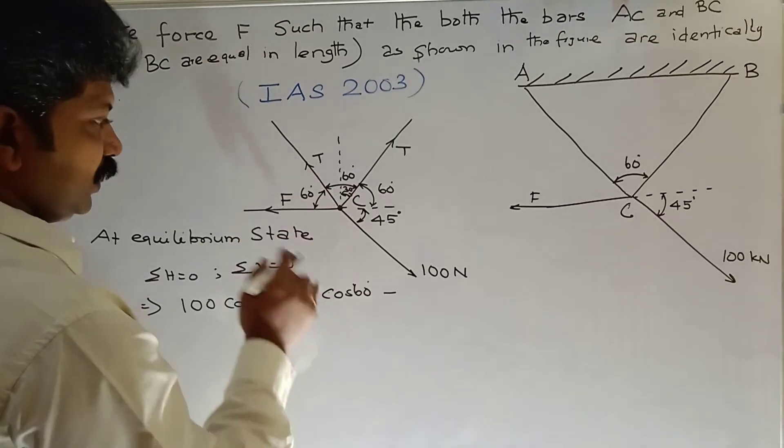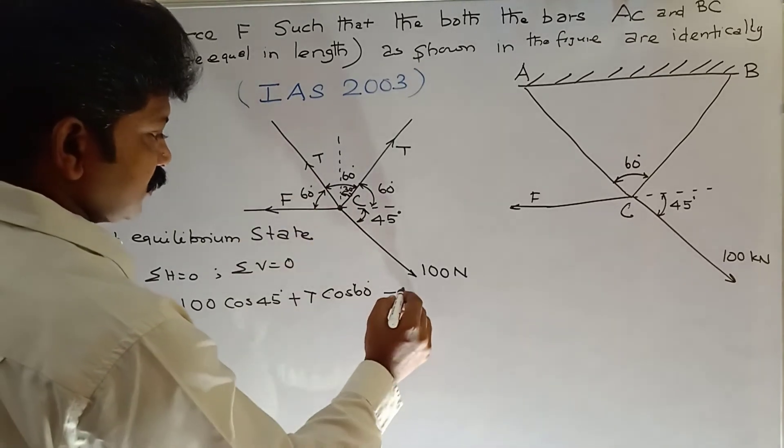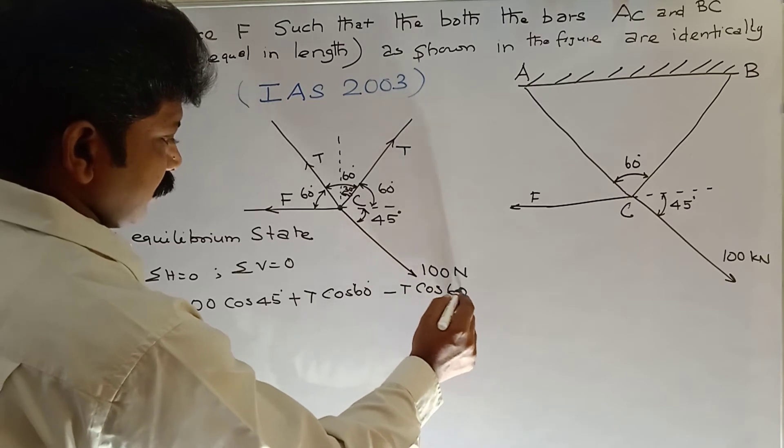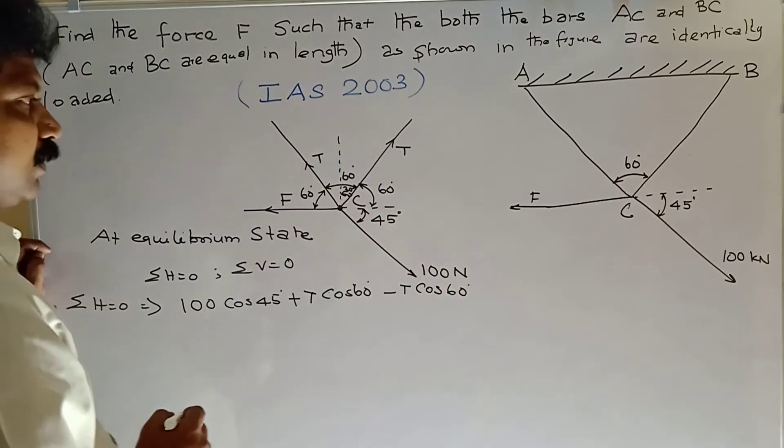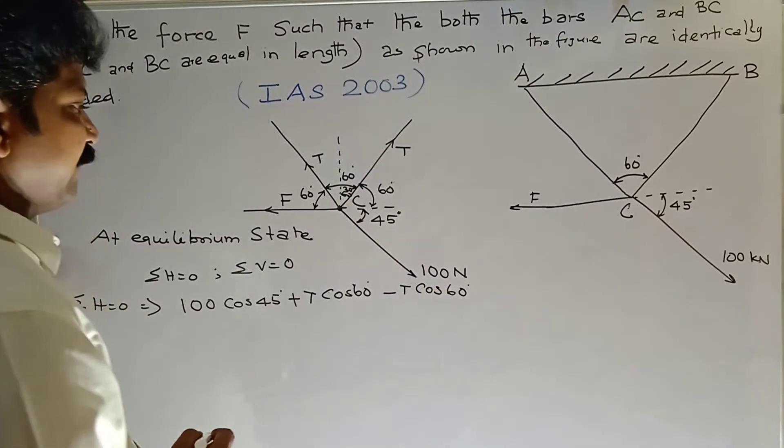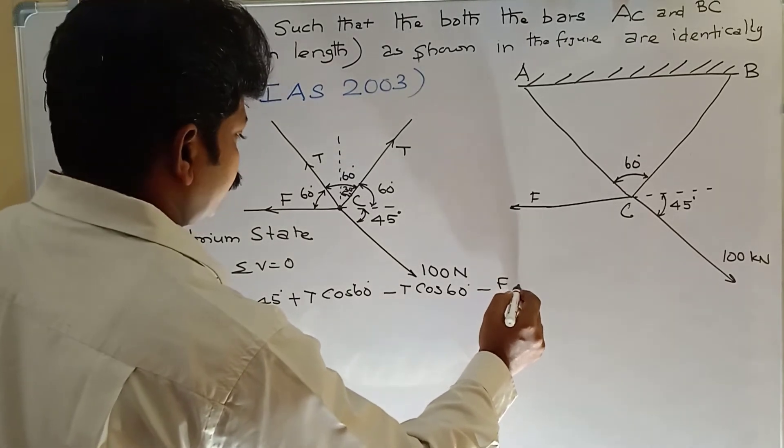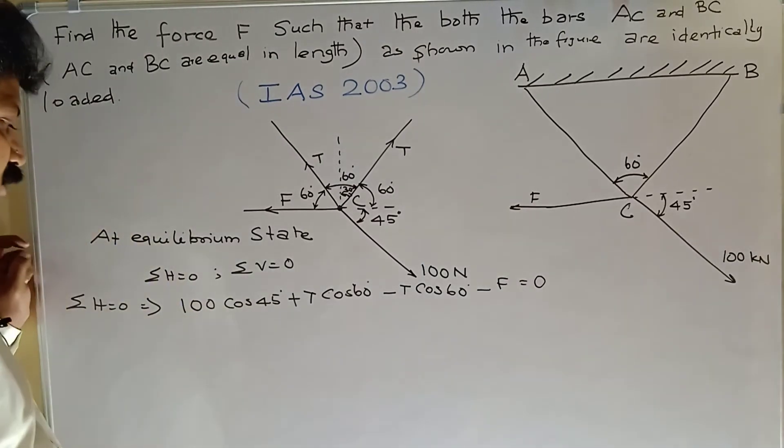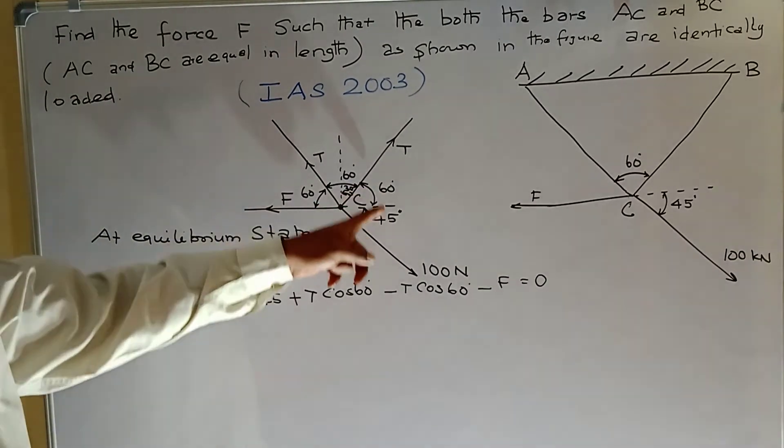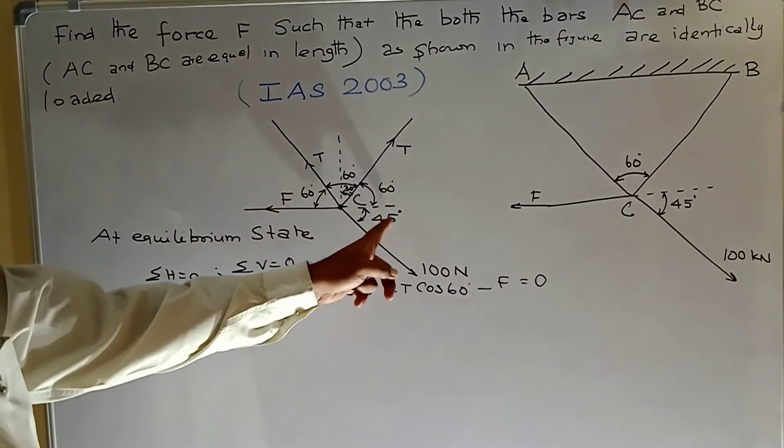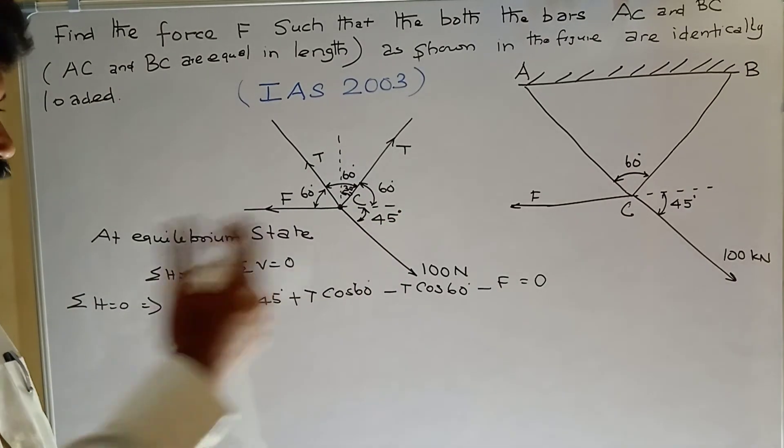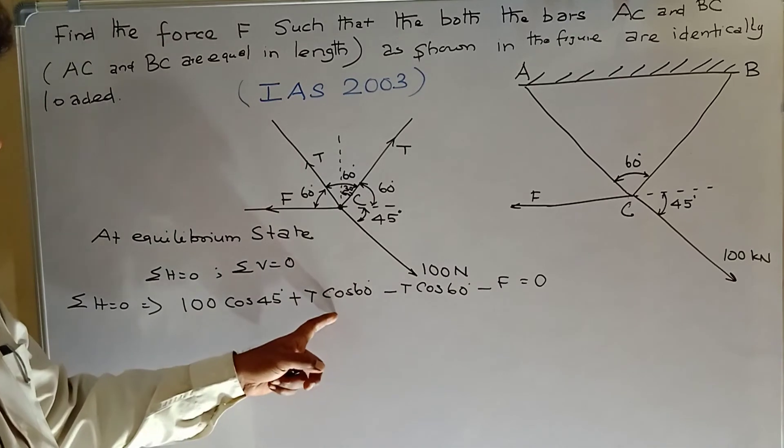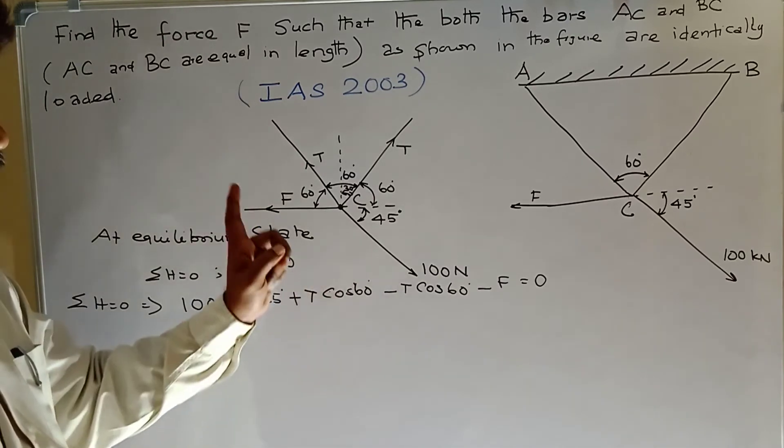Minus T cos 60, minus F equal to 0. So sigma H equal to 0: 100 cos 45 plus T cos 60 towards right side, opposite direction, so positive.